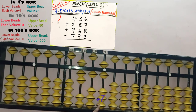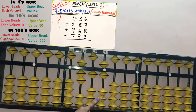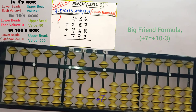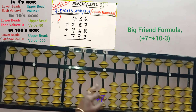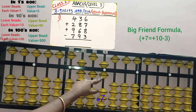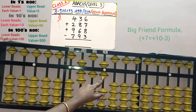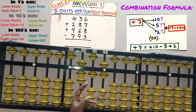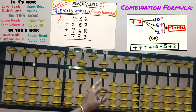Next, add 7 bits in the 1s slot. Only 3 bits are available, so direct addition is not possible. 7's big friend is 3, so we need to remove 3, but we are not having 3 bits to remove — only 1 bit is available. So big friend is also not possible here. Now apply the combination formula for adding 7 in the 1s slot.